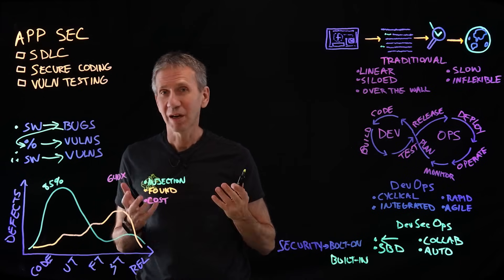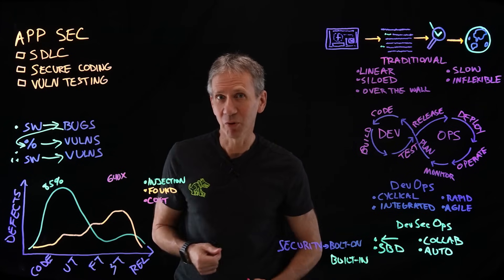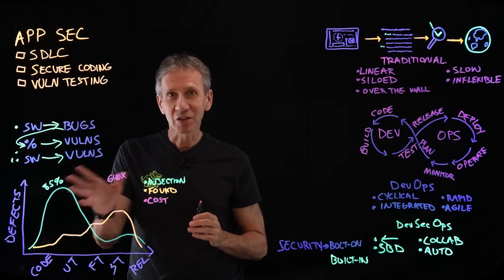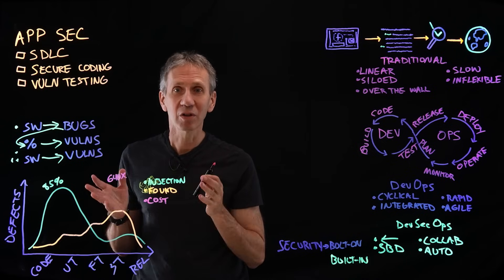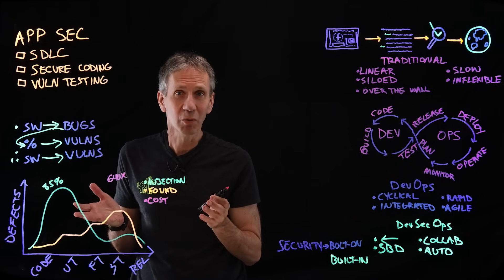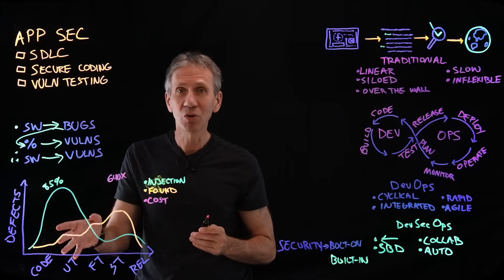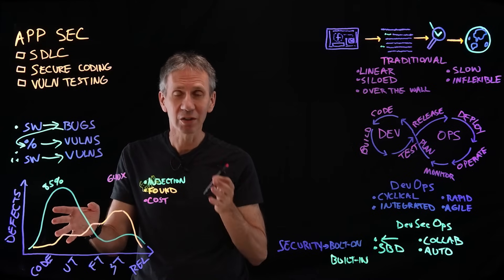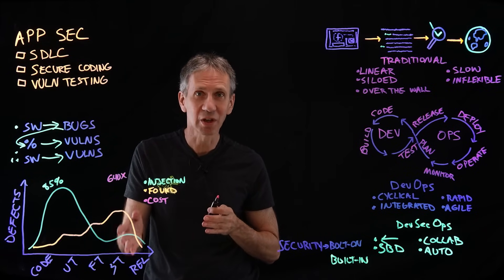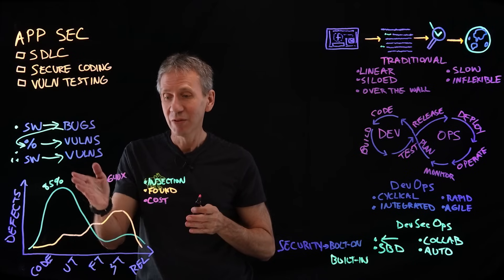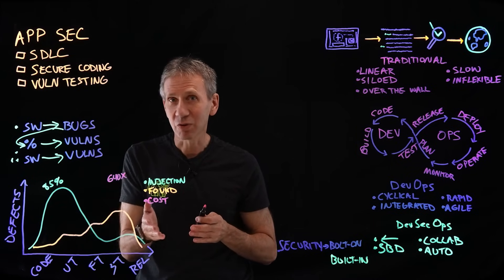What can we do to try to reduce those? We don't want buggy software and we don't want security issues. If we look at the various stages of application development and look at where vulnerabilities are introduced — think about the injection phase — it turns out that most vulnerabilities and bugs are introduced in the coding phase. As we move to unit test, functional test, system test, and release, we find fewer and fewer bugs. That's the green curve — that's when they're introduced.